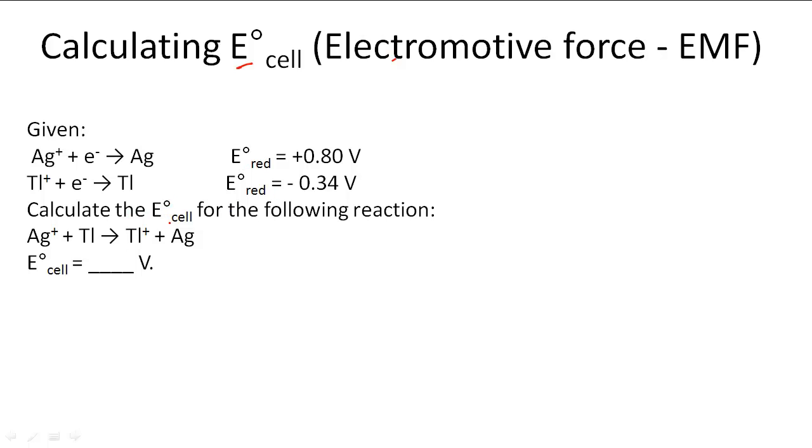Calculate the standard electromagnetic force for the cell given the following reaction. We know one of them is going to be oxidizing and one reducing. Ag is going to be reducing, so we're going to use 0.80 voltage for that.